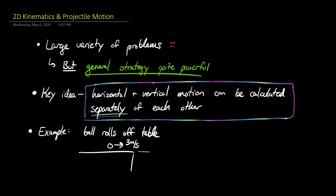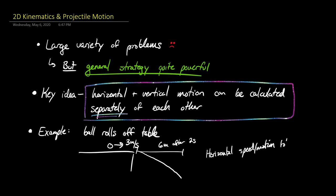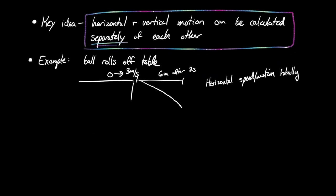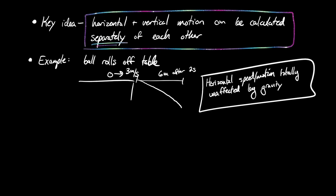after 2 seconds the ball has still traveled 6 meters horizontally. Even though the ball is starting to fall downwards because of gravity, its horizontal motion is unaffected by gravity. This is really hard to wrap your head around at first — you think that as the trajectory curves due to gravity it's losing horizontal speed, but that's just not the case. If you watch slow-mo video of things you will see this is indeed true. Horizontal speed and motion are totally unaffected by gravity — or as some people say, independent of gravity.